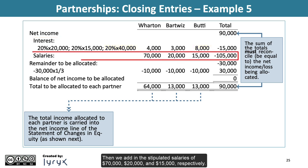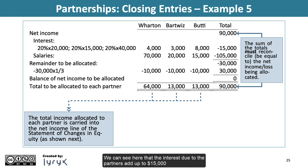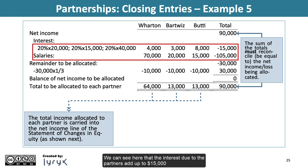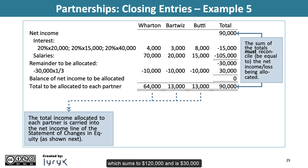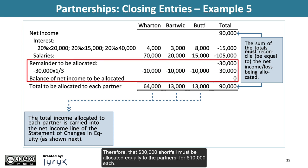Then we add in the stipulated salaries of $70,000, $20,000, and $15,000, respectively. The interest totals $15,000 and the salaries total $105,000, summing to $120,000, which is $30,000 greater than the $90,000 net income. Therefore, that $30,000 shortfall must be allocated equally to the partners, for $10,000 each.